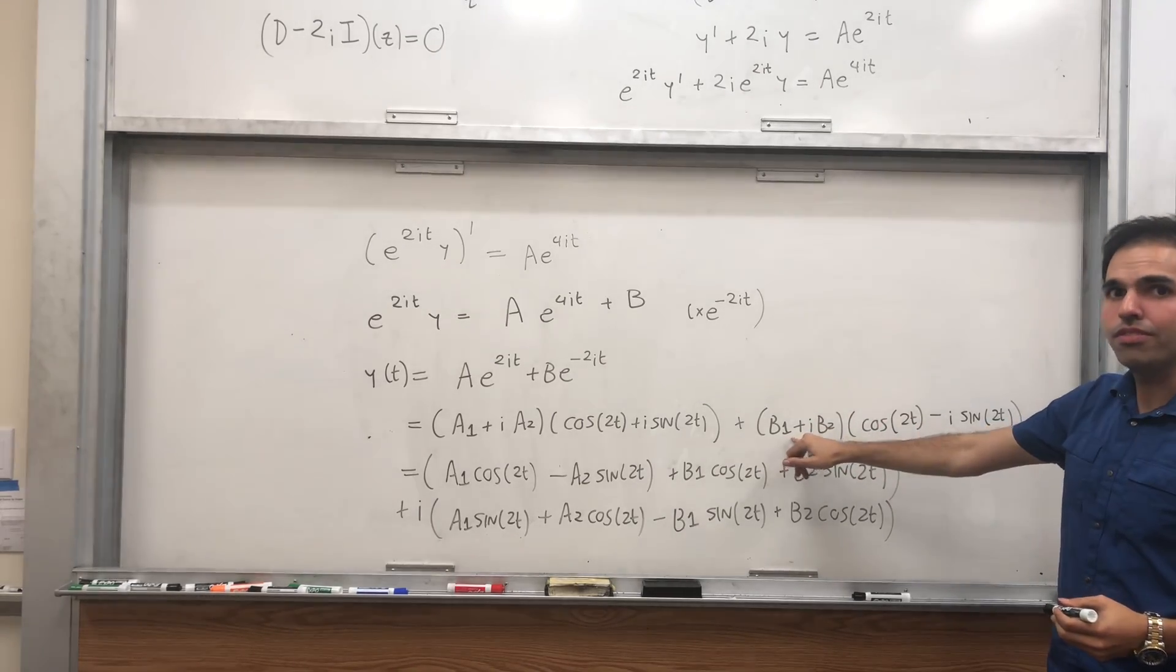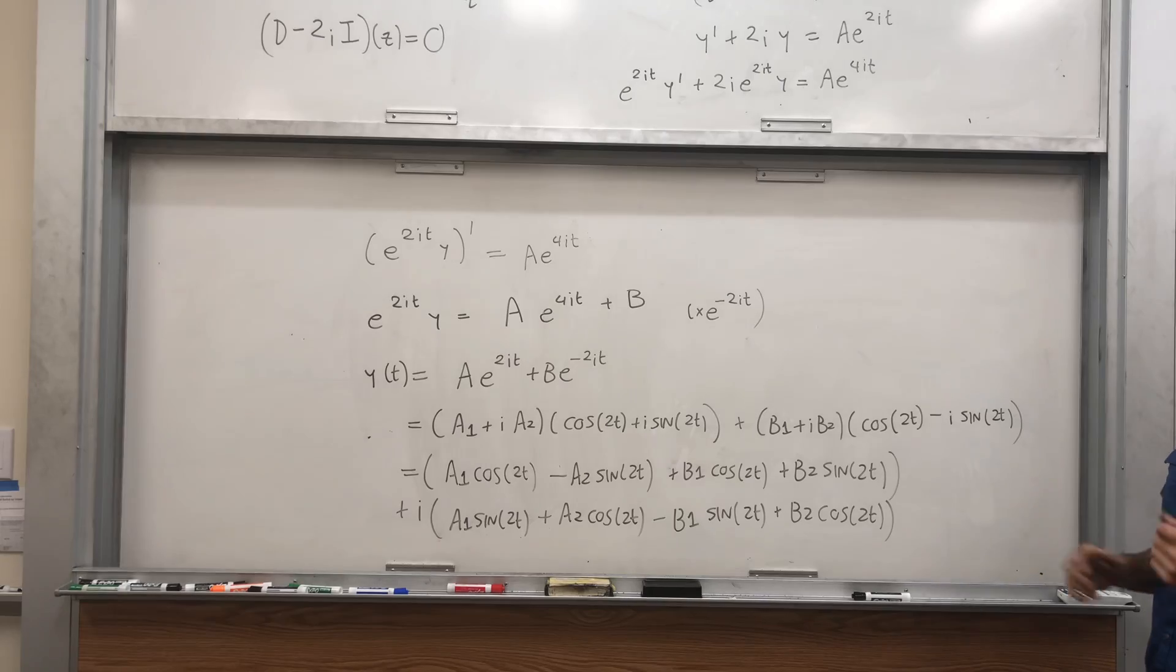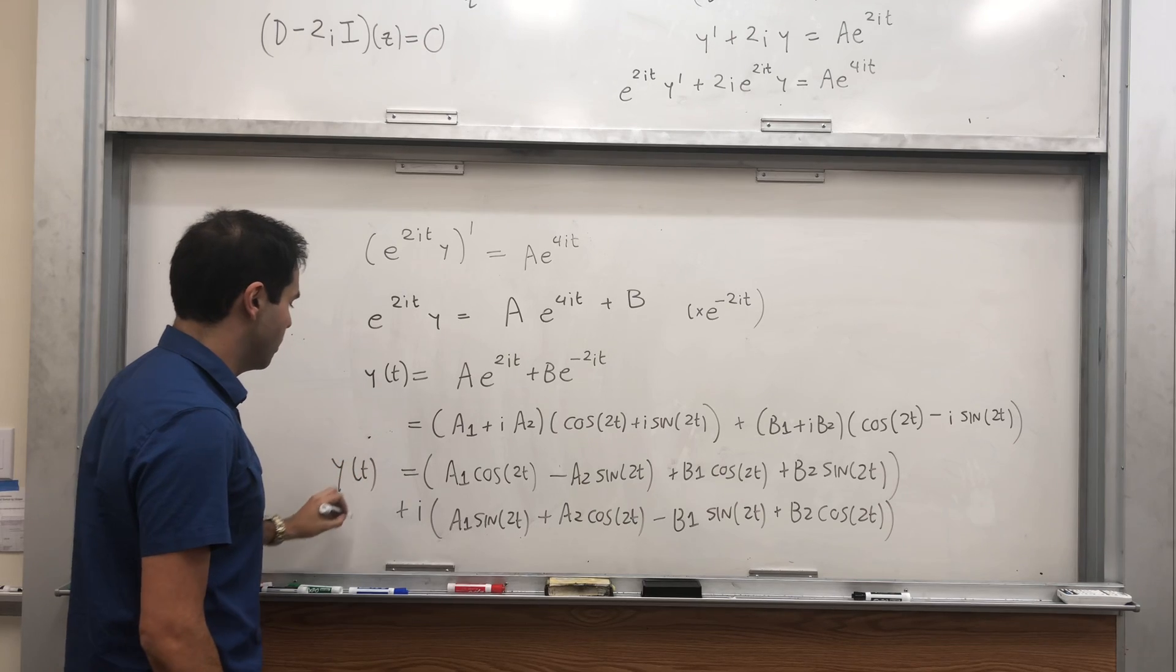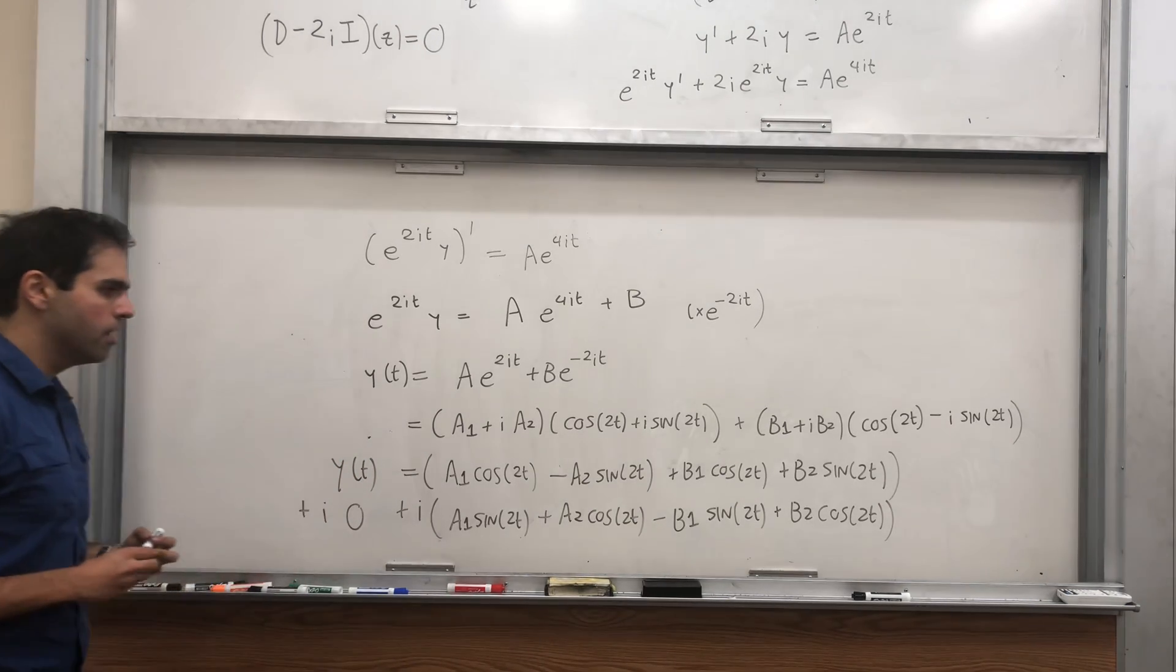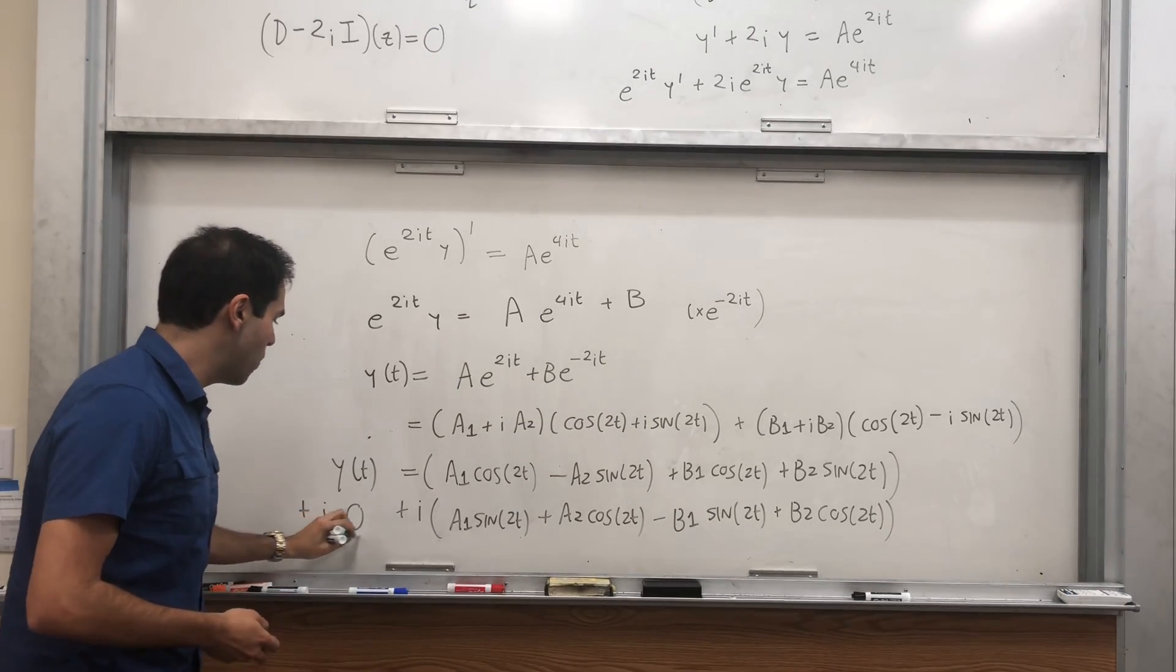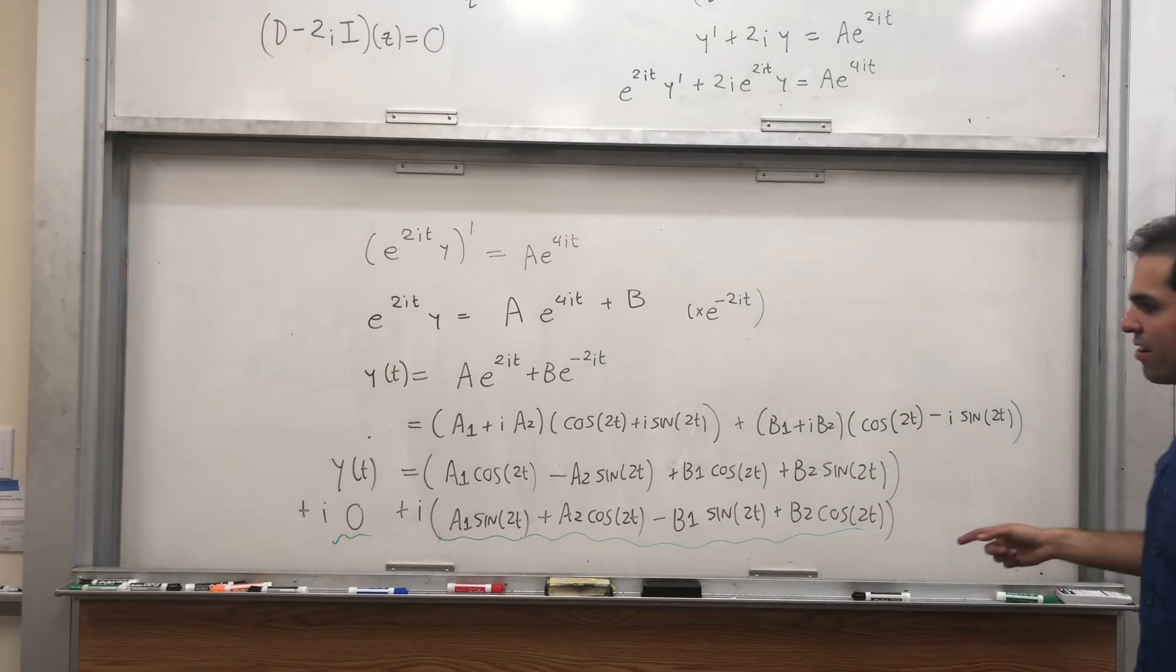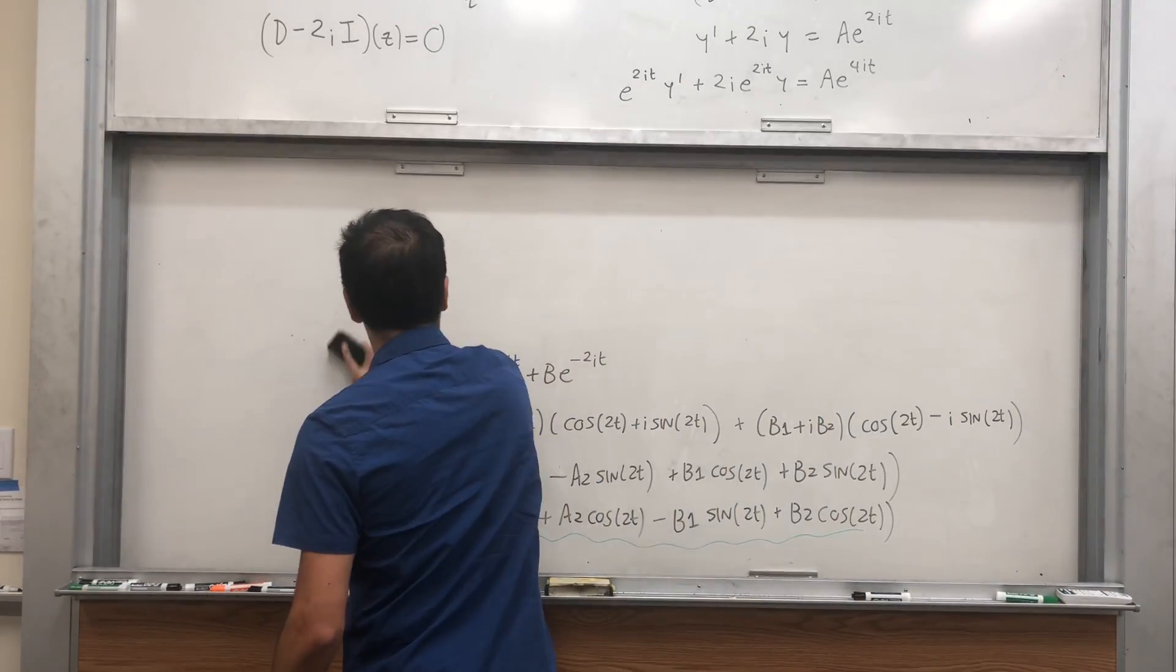All you do, you expand out this expression and separate the real parts and the imaginary parts. Now, remember what is y? It's a real function. So y, you can write it as y plus 0i. In particular, what we get is that the real part is the real part, and the imaginary part is the imaginary part.